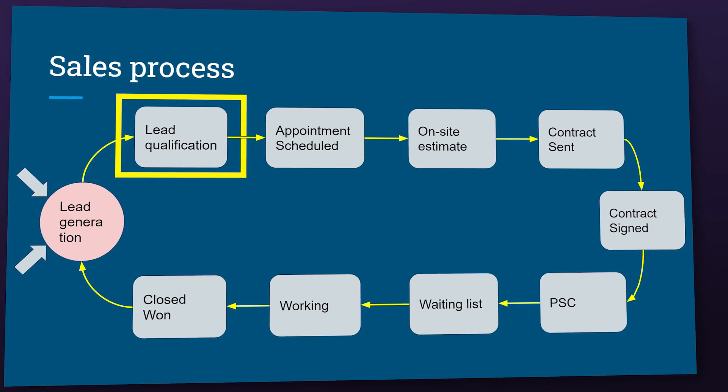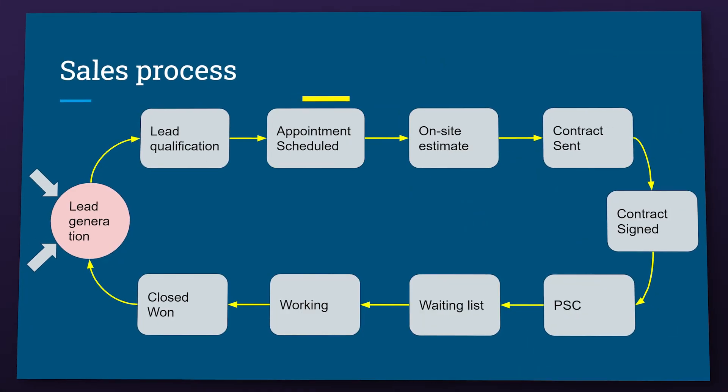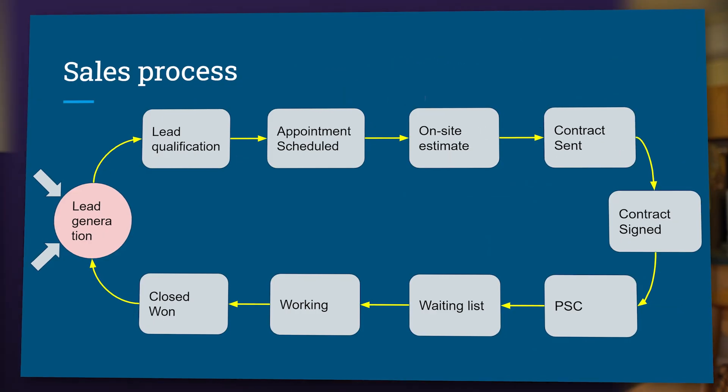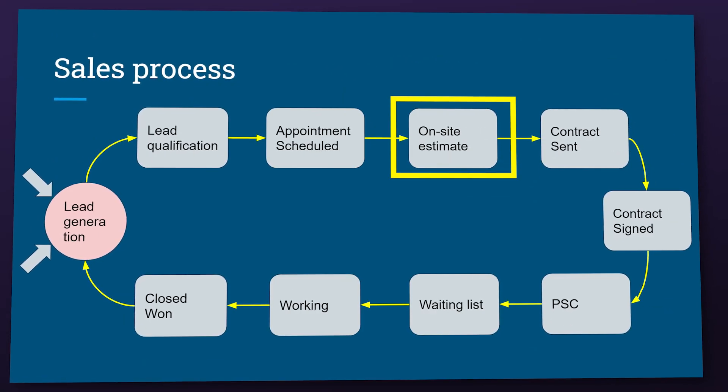First we have lead qualification — the leads are qualified by asking for a lot of information about the project. Then appointment scheduling: the lead becomes a deal, we schedule the appointment, and send welcome emails and text messages. Then we have site visit. The sales rep does the site visit at this point, going over options, job type, materials, why choosing us, and a lot more. Some marketing emails are also being sent during this stage.